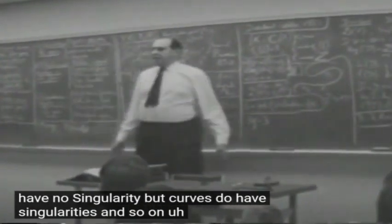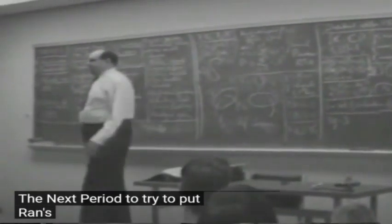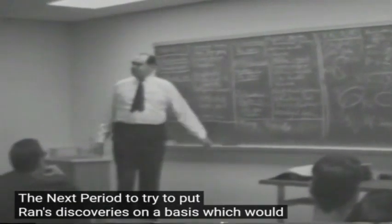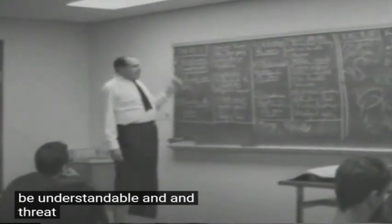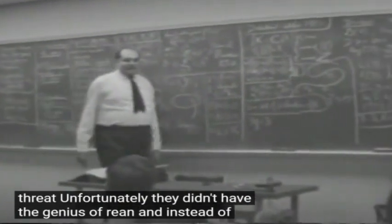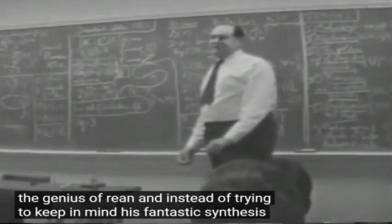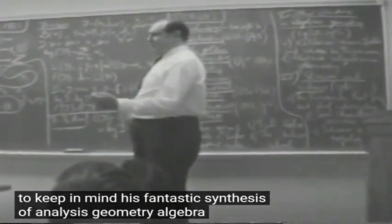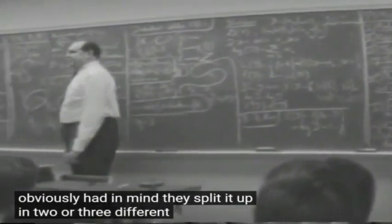And so on led people in the next period to try to put Riemann's discoveries on a basis which would be understandable and correct. Unfortunately, they didn't have the genius of Riemann. And instead of trying to keep in mind his fantastic synthesis of analysis, geometry, algebra which he obviously had in mind, they split it up in two or three different directions.